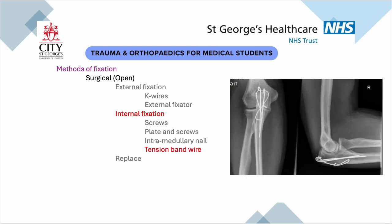A very special form of internal fixation is a tension band wire — a couple of fine smooth pins with a wire looped through the bone and around the pins, which generates a compressive force. This is used exclusively in the patella and as you can see here in the olecranon. It looks rather Heath Robinson but actually works very very well, although quite often the pins irritate and you have to take them out again later.